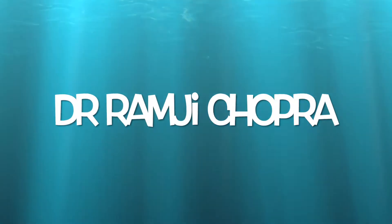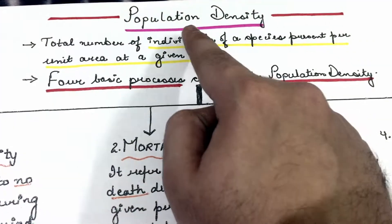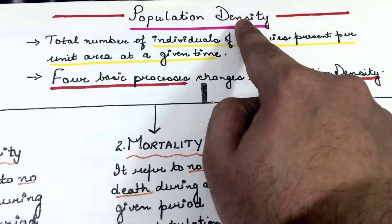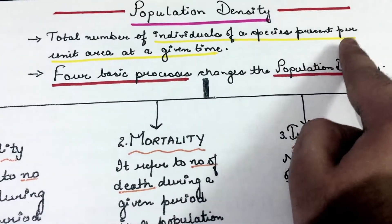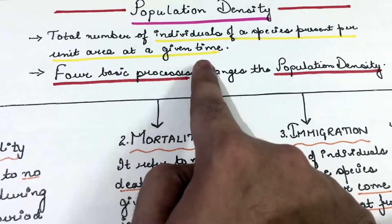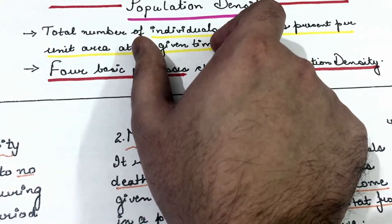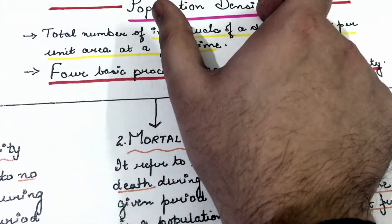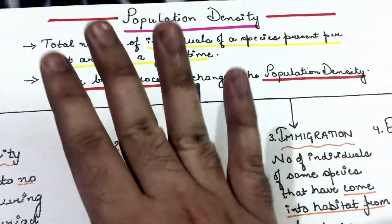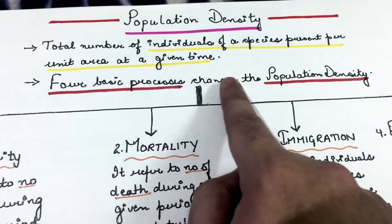We know population density is the total number of individuals present per unit area at a given time. Four basic processes change the population density. Let us look at those.